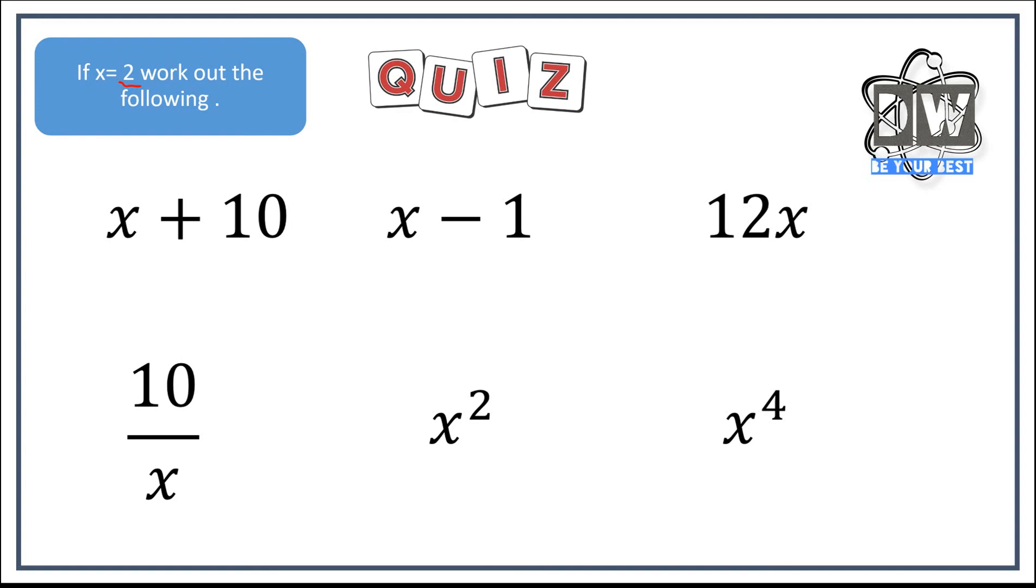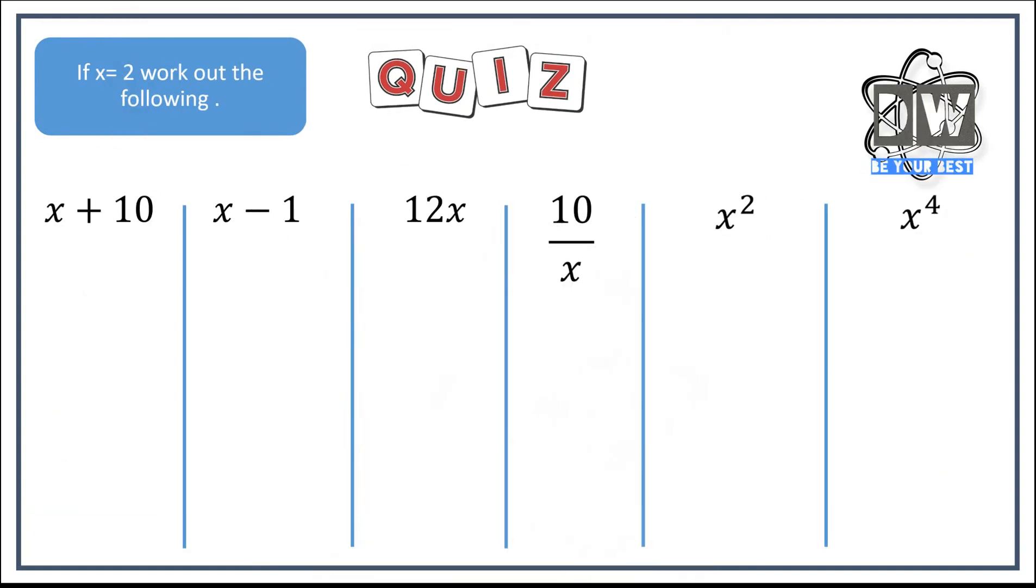Okay, here we go. Did I promise this was going to be a short screencast? If I didn't, it is a very short screencast which you'll all be glad to know. Here goes your answers. So for the first one we took away x, we put in two. So two plus ten equals twelve. For the next one we took away x, we put in two. Two minus one is one. We took away x, we put in two. Twelve times two is 24. Took away the x, put in the two. So we've got ten divided by two equals five. Two times two is four. Two times two is four times two is eight times two is sixteen.